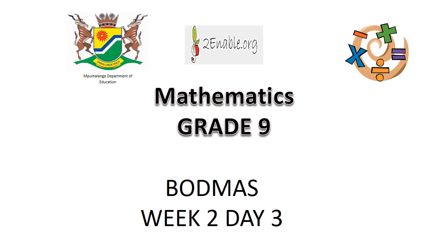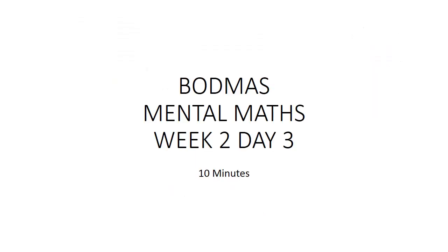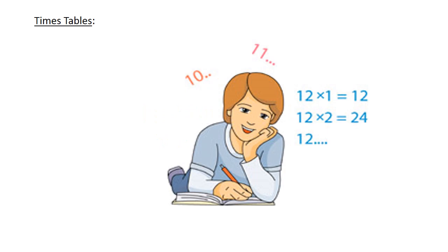Bad math. Mental math. Times tables: 9 times 8 equals 72. 12 times 9 equals 108.